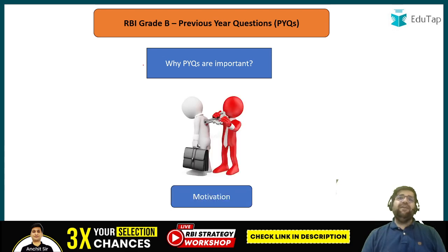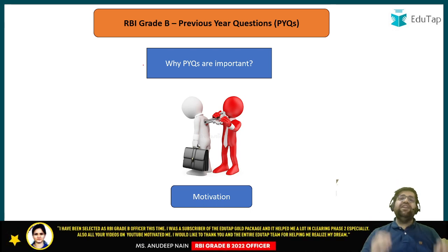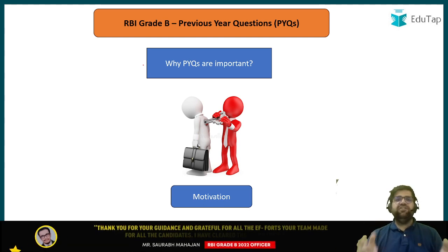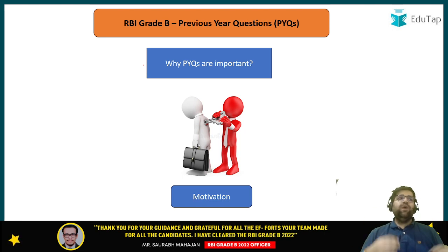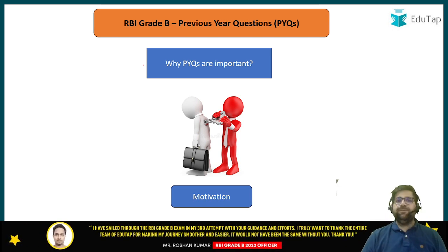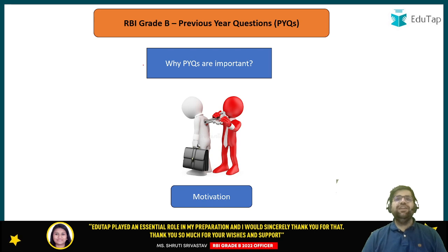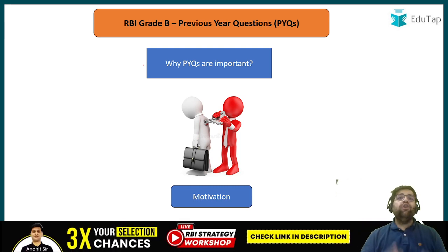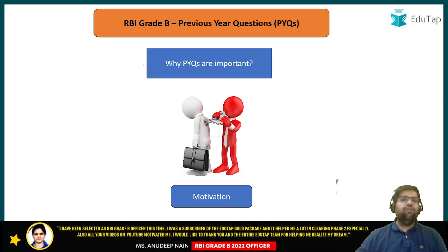The first is motivation. Previous year questions will definitely motivate you. They will remove self-doubt about whether you can clear RBI Grade B or not. For example, if you are studying leadership — one of the most important chapters in management — once you have covered all the concept notes and videos of leadership, the time comes to solve previous year questions related to that chapter. Once you are able to solve all those questions, you will gain motivation and feel powerful that you have completed one of the most important chapters.